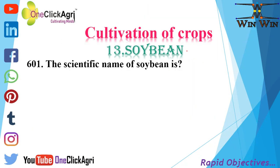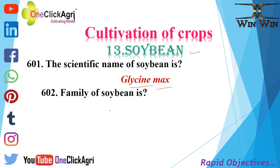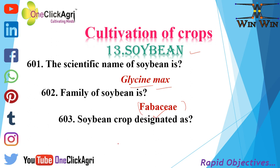Cultivation of crops — Soybean. Scientific name of soybean is Glycine max. Family of soybean is Fabaceae. Soybean crop is designated as boneless meat.